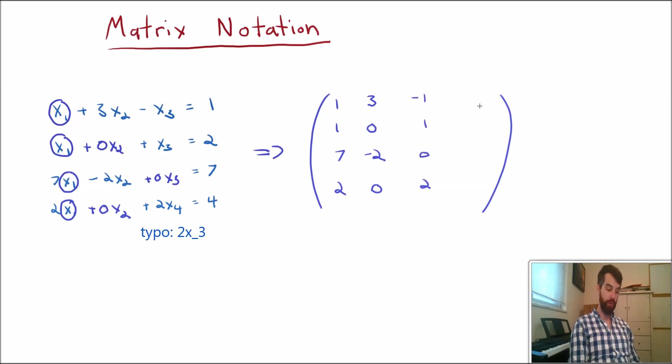And finally, on the far right hand, after the equal signs, 1, 2, 7, 4. And to try to keep the equal signs in there, I might come along and put this sort of dotted line here that sort of separates it. So the stuff on the left hand side is the thing that has variables, the stuff on the right hand side is just going to be those constants.